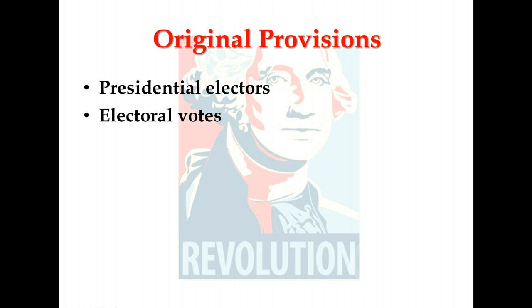Original Provisions: The Framers gave more time to the method for choosing the President than to any other matter. It was, said James Wilson of Pennsylvania, the most difficult of all on which we have had to decide. The difficulty arose largely because most of the Framers were against selecting the President by either of the obvious ways — by Congress or by a direct vote of the people. Early in the Convention, most of the delegates favored selecting by Congress. Later, nearly all delegates came to believe that Congressional selection would, as Alexander Hamilton said, put the President too much under the legislative thumb.